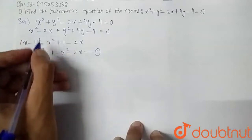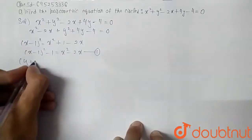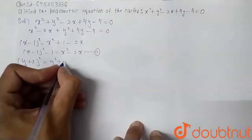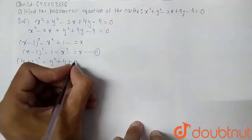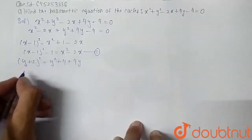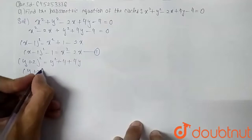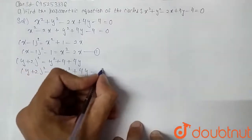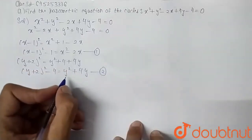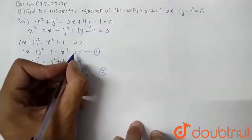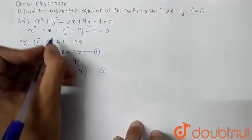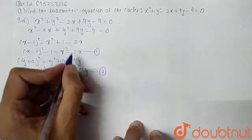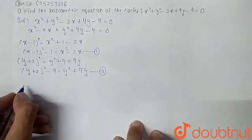Similarly, using (a + b)² = a² + b² + 2ab, we get (y + 2)² - 4 = y² + 4y. Let this be equation number 2. Now we substitute the values from equations 1 and 2 back into the original equation.